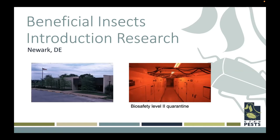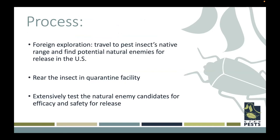I'll walk you through the project I worked on with the brown marmorated stink bug. The first step is foreign exploration — we have to figure out what insect we're dealing with, go to where that insect is native, find potential natural enemies that we might be able to release in the U.S. pending research, bring them back, figure out how to rear and mass rear them, make sure they're safe, and ensure they only target the target pest and not native insects that are already here.